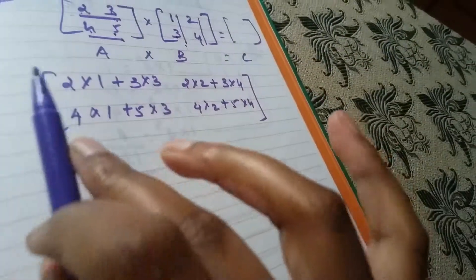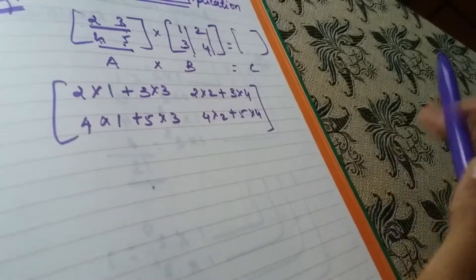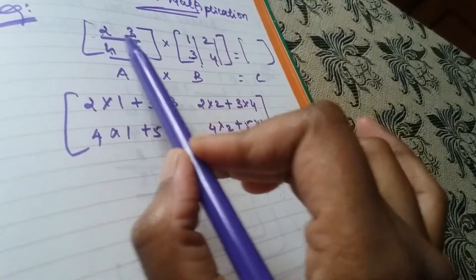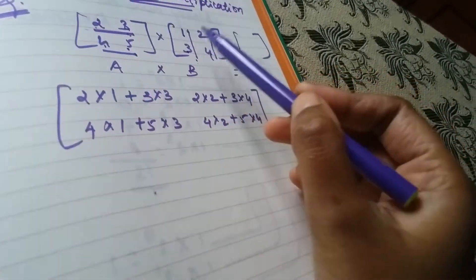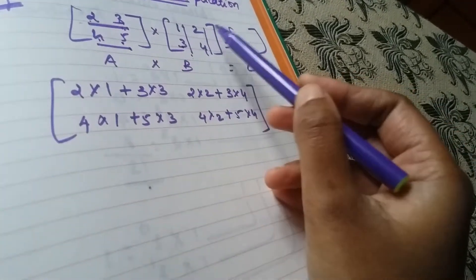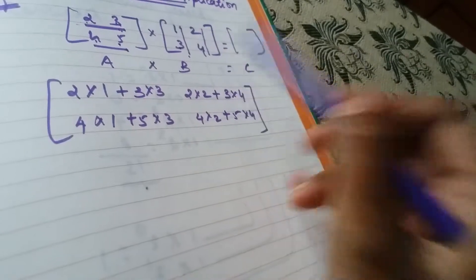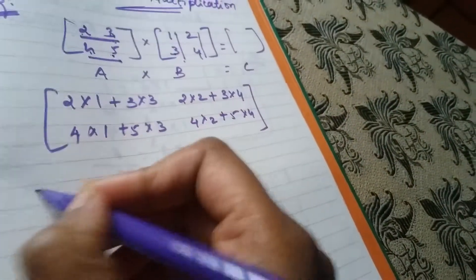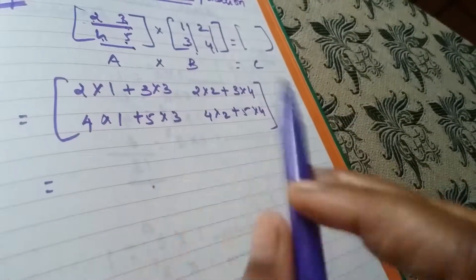A second row, B second column. Okay? So now we will multiply and add.